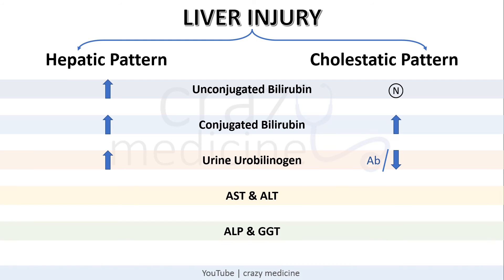AST and ALT are increased in the hepatic pattern — up to 1000 in acute hepatitis, or around 200 to 300 in chronic hepatitis. However, they can be normal or only mildly increased in cholestatic or obstructive jaundice. ALP and GGT are markers of cholestasis, so both are elevated in the cholestatic pattern but are normal or only very mildly increased in the hepatic pattern. These are the basic differences between the hepatic and cholestatic patterns of liver injury.